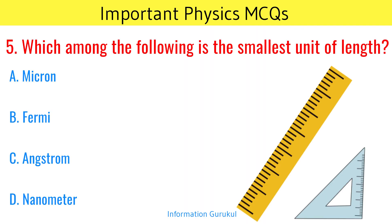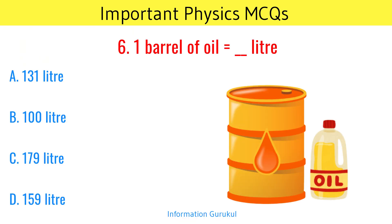Which among the following is the smallest unit of length? Fermi. One barrel of oil is equal to? 159 litres.